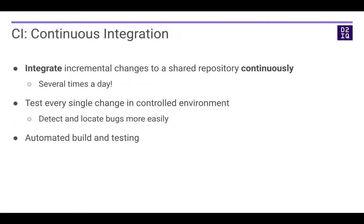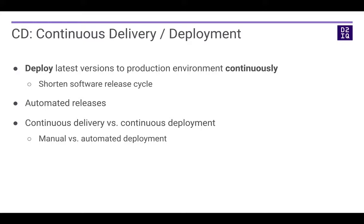The second idea is continuous delivery or deployment. This concept is similar to continuous integration, but there are some things that cannot be done by testing alone. For example, you may want to roll out features, get them to customers, and receive early feedback. If you want to do this, you need to keep rolling out new releases. This is where continuous delivery or continuous deployment takes place — you make your software ready to deploy anytime and always deploy the latest version to your production environment continuously. By doing this, you can shorten your software cycle, get feedback early, and use that to adjust your development direction. To enable this, you also need software to help you do automated releases.